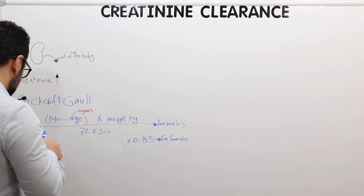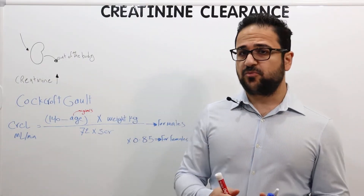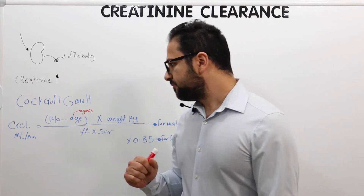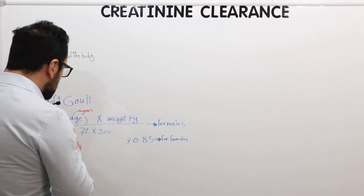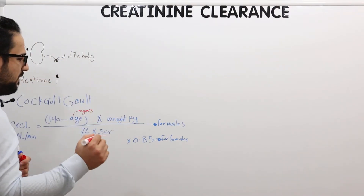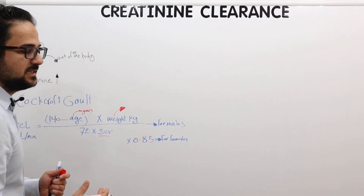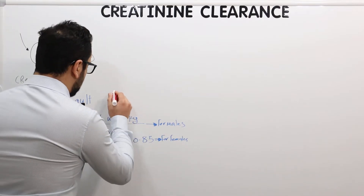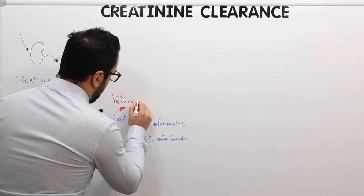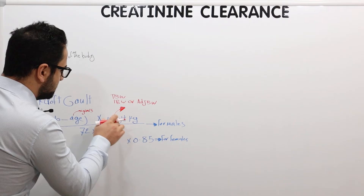During questions, whether you're preparing for examinations or working in practice, you would need to calculate the creatinine clearance for patients. Usually all these factors — the age in years and serum creatinine — will be given. The one thing you should look out for is basically the weight, because depending on the patient's weight, it could be total body weight, ideal body weight, or adjusted body weight.